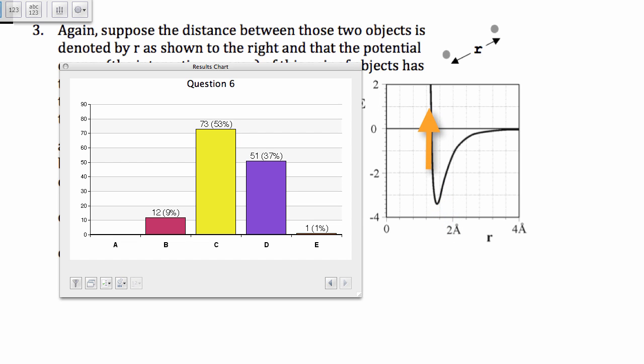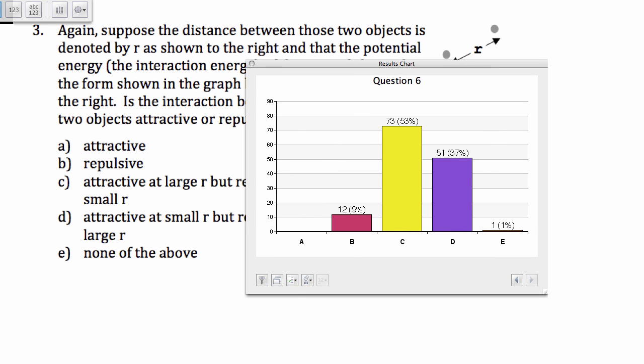And it's a repulsive potential energy when r is small, and I think that's, yeah, that's C.